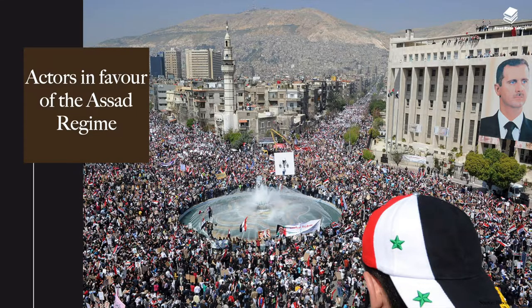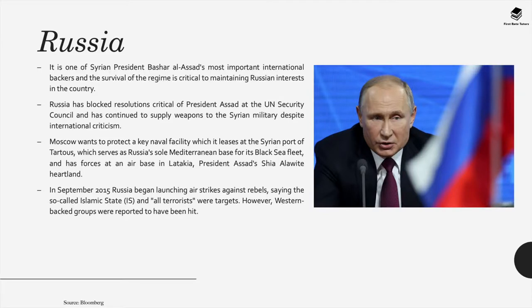When it comes to actors in favour of the Assad regime, firstly there is Russia — one of Syrian President Bashar al-Assad's most important backers. The survival of the regime is critical to maintaining Russia's interests in the country as well as in the Middle East. Russia has blocked resolutions critical of President Assad at the UN Security Council and continued to supply weapons to the Syrian military despite international criticism. Moscow wants to protect a key naval facility which it leases at the Syrian port of Tartus, which serves as Russia's sole Mediterranean base for its Black Sea fleet.